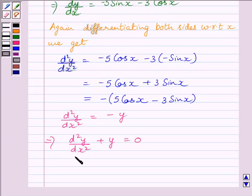So, d square y upon dx square plus y is equal to 0. This is our required answer. Hence, proved we were required to prove this equation only in this question.